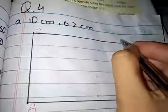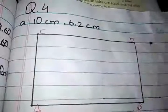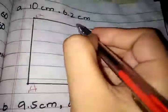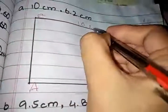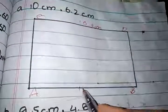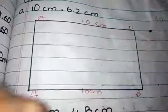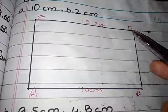The length of AB and CD is equal to each other. Their length is 10 centimeters. And the length of AC and BD is equal to each other, 6.2 centimeters.